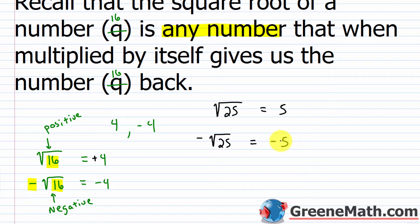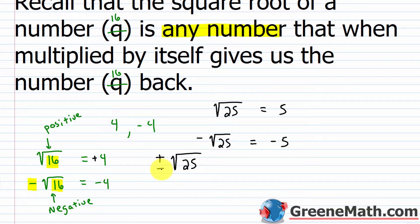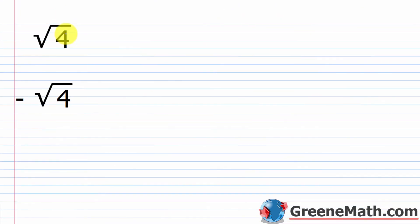As we learned in Algebra 1 when we started looking at the quadratic formula, there's a shortcut notation. Instead of writing both separately, you can use plus or minus notation: ±√25. This is asking for both the positive and negative square root of 25, which equals ±5. The positive square root of 25 is 5, and the negative square root of 25 is negative 5. This is just a more compact way to write things.